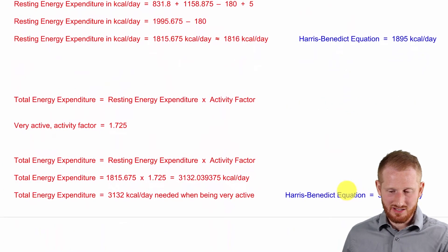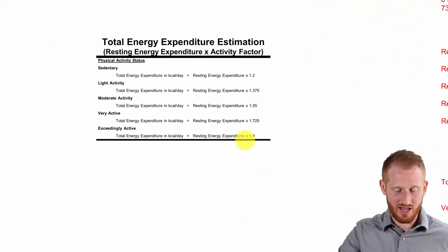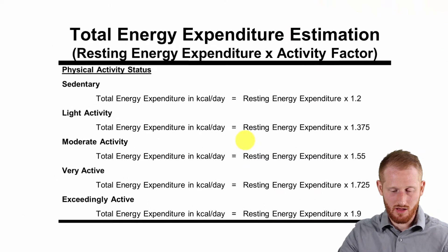What we now need to do, though, is we need to look at the total energy expenditure, which is really what's important. So total energy expenditure equals the resting energy expenditure times an activity factor. Alright, so let's look at some of the various activity factors here now.